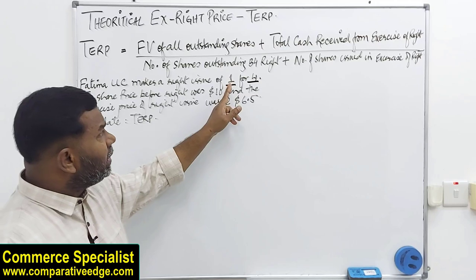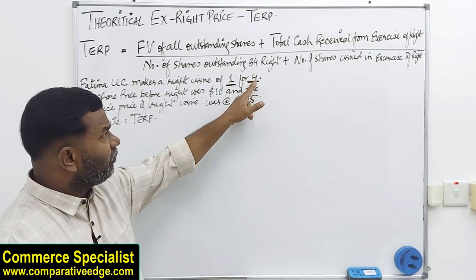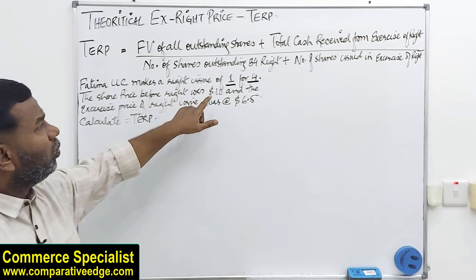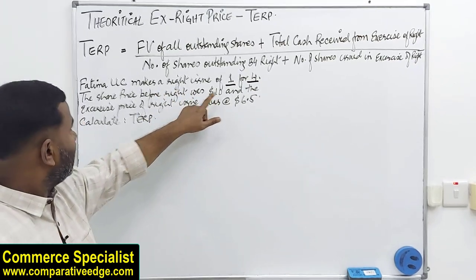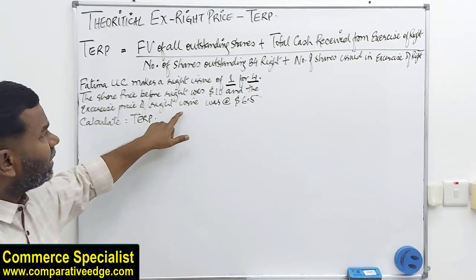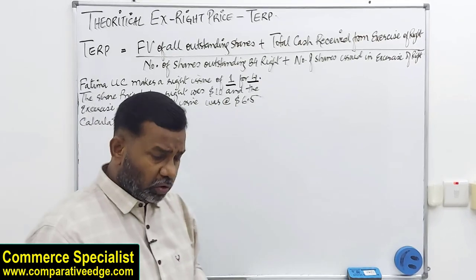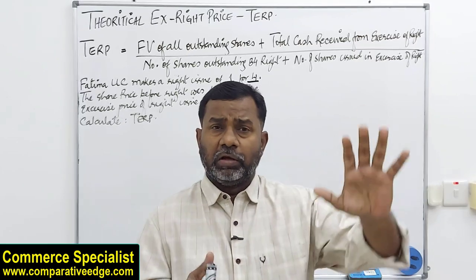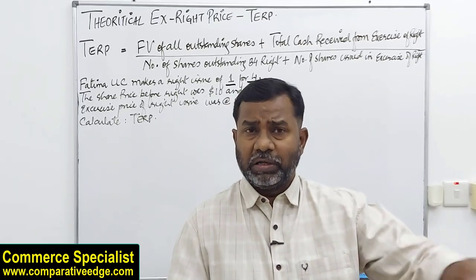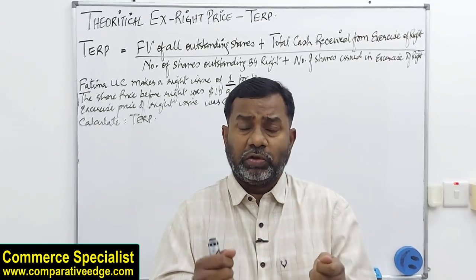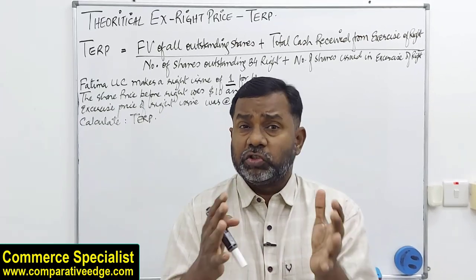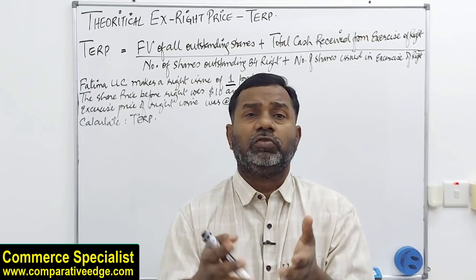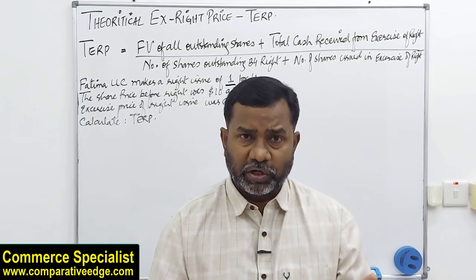Looking at this question: Fatma LLC makes a right issue of 1 new share for every 4 shares held. The share price before the right issue was $10 each, and the exercise price of the right issue is $6.50. This means the company wants to sell shares — the current market value is $10 — but existing shareholders can get the new shares for $6.50 per share.